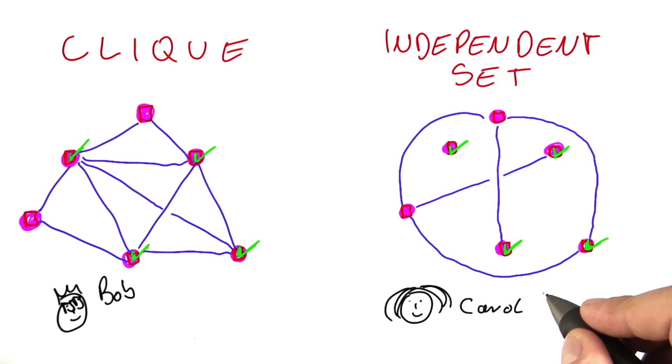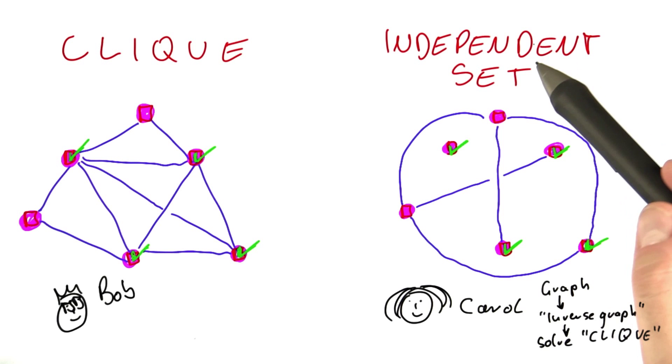Carol wanted to take independent set. What she would basically do is she would start out with a graph, then she would build the inverse graph and solve clique. That would give her the same solution as if she were looking for an independent set on the original graph.